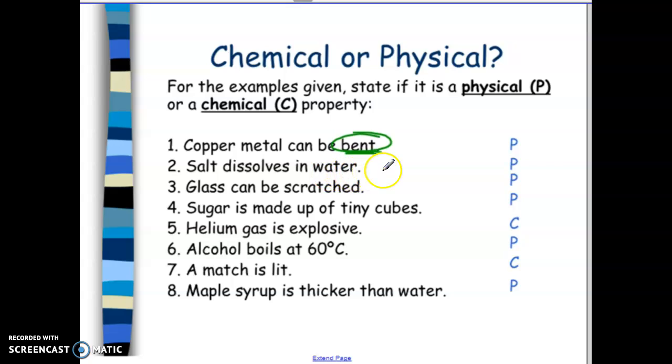Salt dissolves in water is a physical property, and we're describing here the solubility. Glass can be scratched. So that is a physical property, and we're describing the hardness. Remember, hardness is the ability of being scratched or bent. Sugar is made up of tiny cubes. So this is a physical property, and this is describing the crystal form.